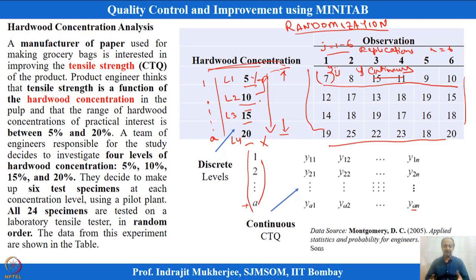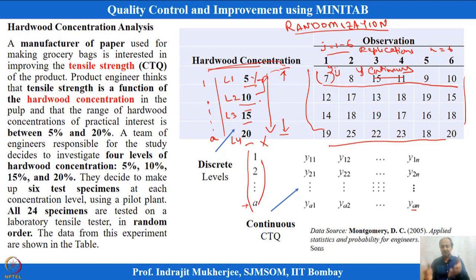In a fixed effects model, levels like 5, 10, 15, and 20 percent are discrete, and we cannot generalize to values between them. If generalization between levels is desired, that is a random effects model. Here, we use fixed effects to determine which discrete level best maximizes tensile strength.